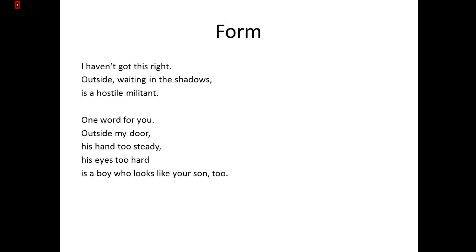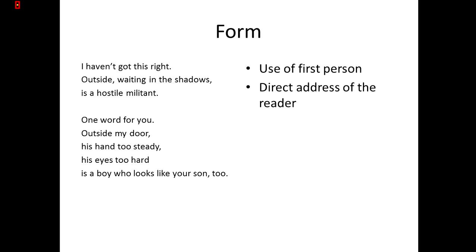In terms of form and structure, there is a use of first person — the voice uses first person pronouns: 'I haven't got this right.' And there is also second person: 'one word for you,' 'outside my door,' 'looks like your son too.' This use of first and second person shows a more immediate poem — it is a direct address of the reader, speaking to us directly.